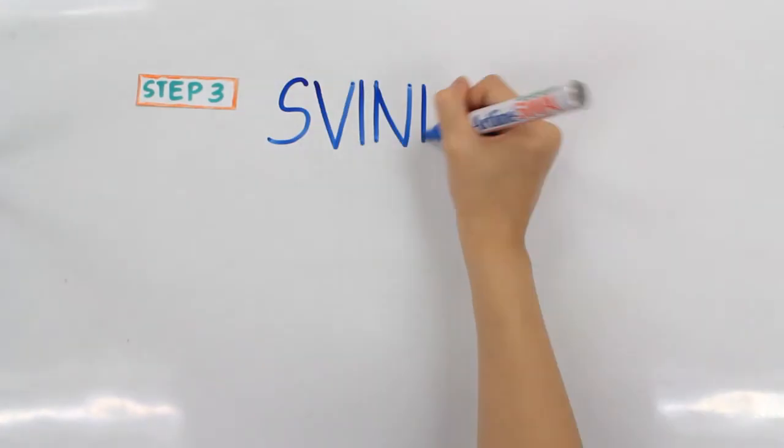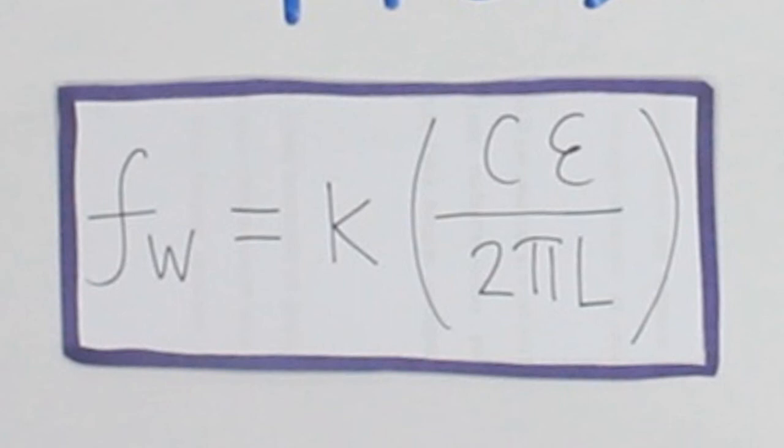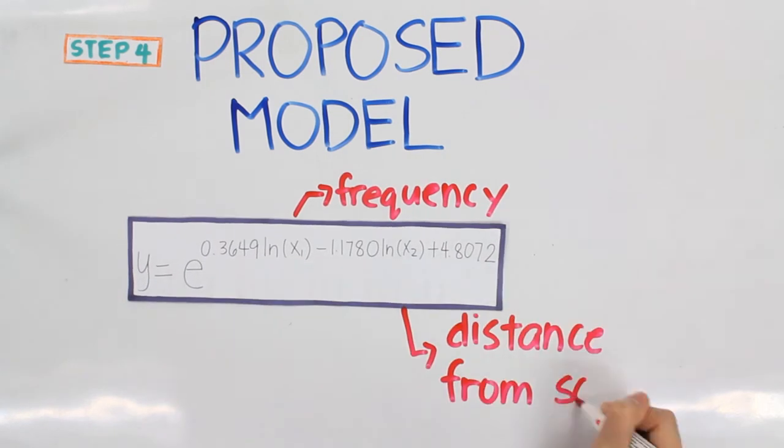Next, we calculate the frequency of the vibration using the Svinken model. The peak particle velocity can now be calculated by knowing the frequency and the horizontal distance from the source to the point being considered.